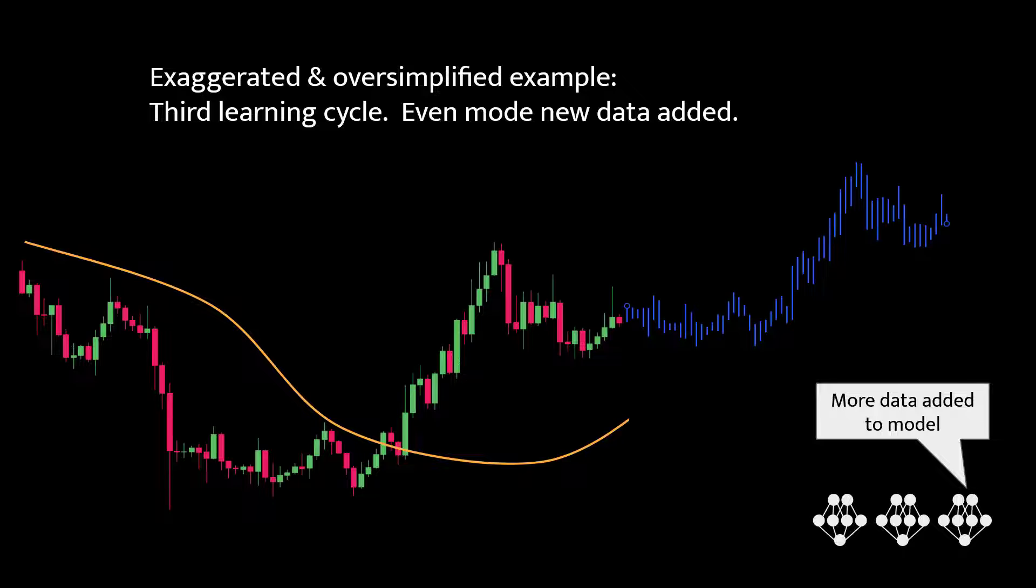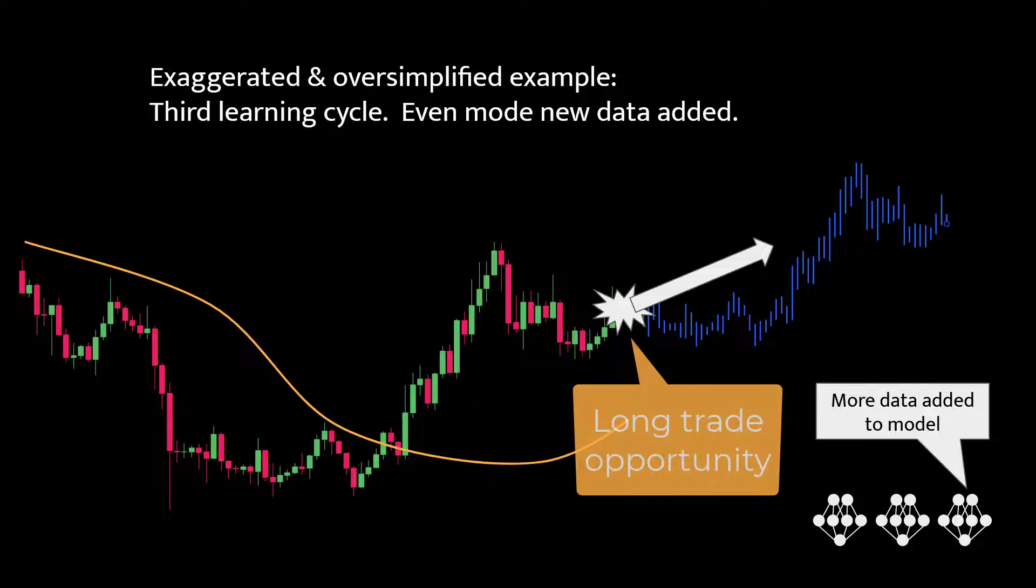Now here the market has shown a price increase and our model adapts accordingly. It predicts even higher prices as it learns from the changing patterns. And then here a long trade should occur when the model identifies a bullish pattern, indicating the potential for further price increases.